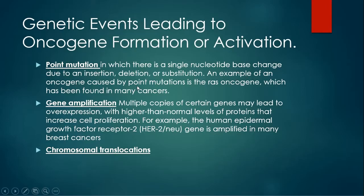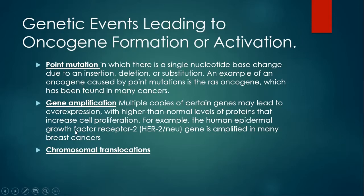The second genetic event is gene amplification, where multiple copies of certain genes may lead to overexpression with higher-than-normal levels of proteins that increase cell proliferation. For example, the human epidermal growth factor receptor 2 (HER2/neu) gene is amplified in many breast cancers.